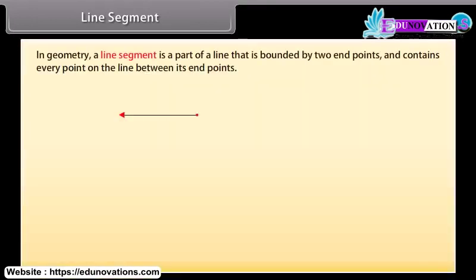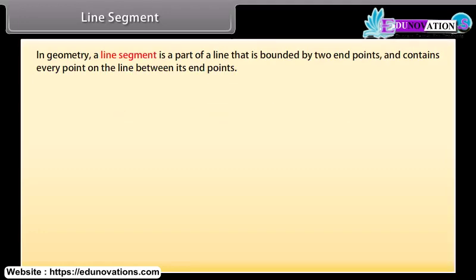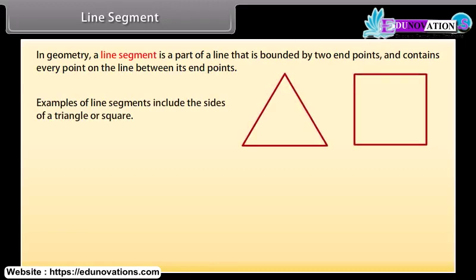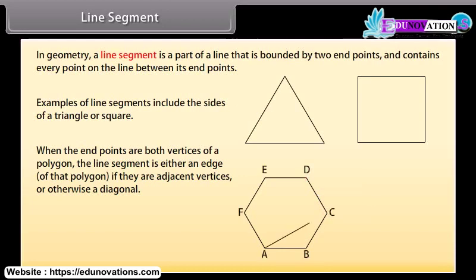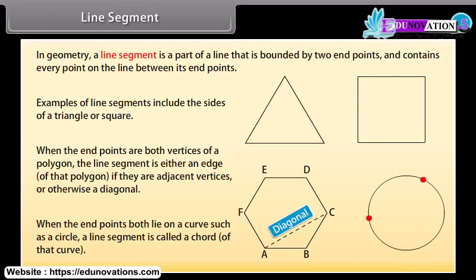In geometry, a line segment is a part of a line that is bounded by two end points and contains every point on the line between its end points. Examples of line segments include the sides of a triangle or a square. More generally, when the end points are both vertices of a polygon, the line segment is either an edge of that polygon if they are adjacent vertices, or otherwise a diagonal. When the end points both lie on a curve such as a circle, a line segment is called a chord of that curve.